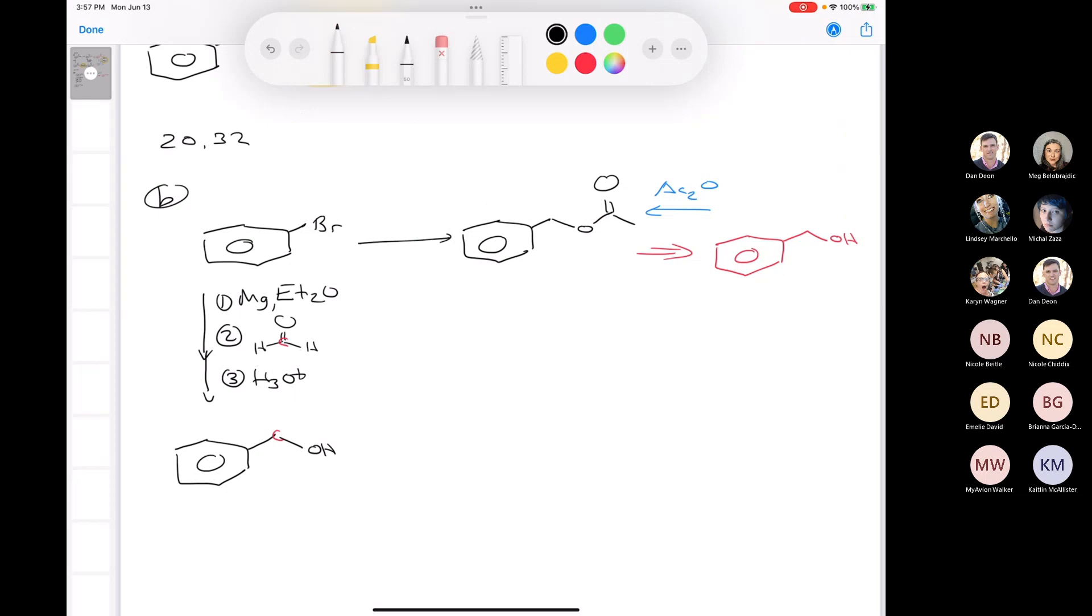So, here's – I'll highlight this carbon in red. That would give you this compound, where you have benzyl alcohol, and then all you have to do is treat that with acetic anhydride, or you could treat it with acetyl chloride in pyridine. Either one would work.